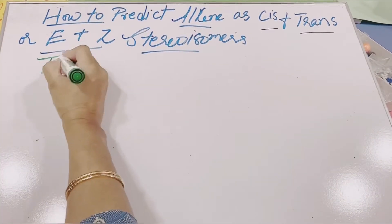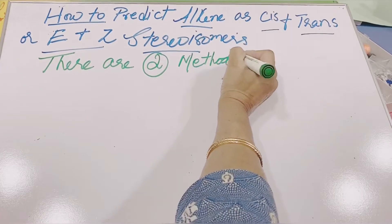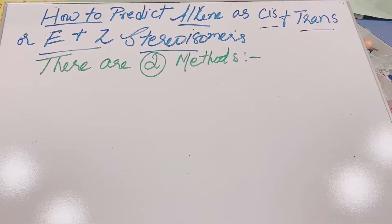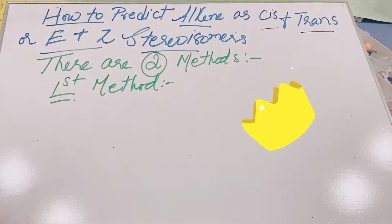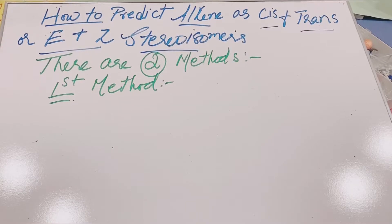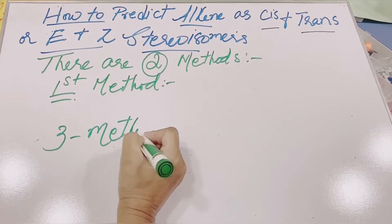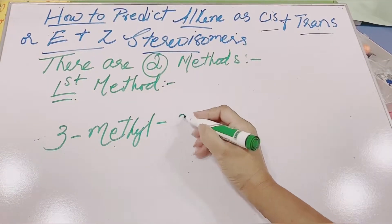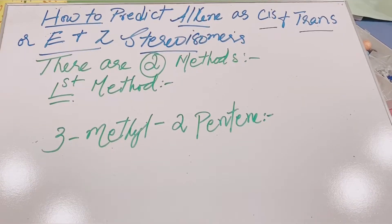There are two methods to predict alkenes as cis and trans or E and Z stereo isomers. The first method — let me explain the first one. I'll draw the structure of the compound we are discussing today, which is 3-methyl-2-pentene, so that we can follow along.